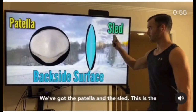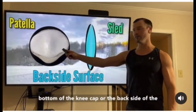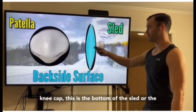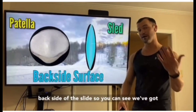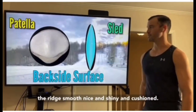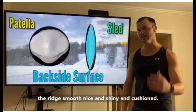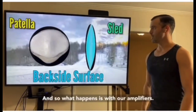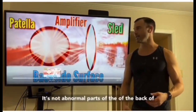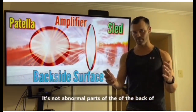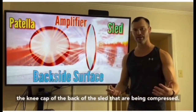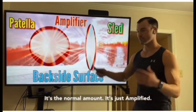Back to our analogy — we've got the patella and the sled. This is the bottom or backside of the kneecap; this is the bottom or backside of the sled. You can see we've got the ridge, smooth, nice, shiny, and cushioned. With our amplifiers, it's not abnormal parts of the back of the kneecap being compressed — it's the normal area, just amplified: normal, but higher than it needs to be.